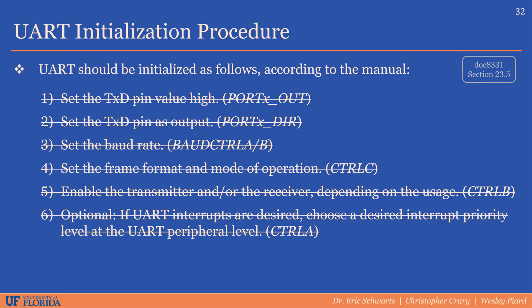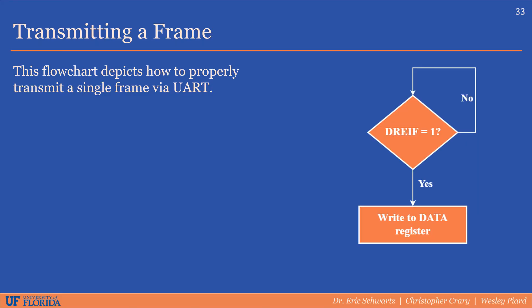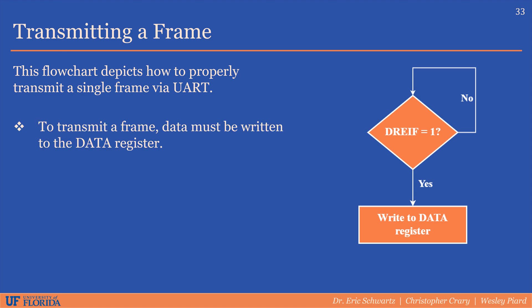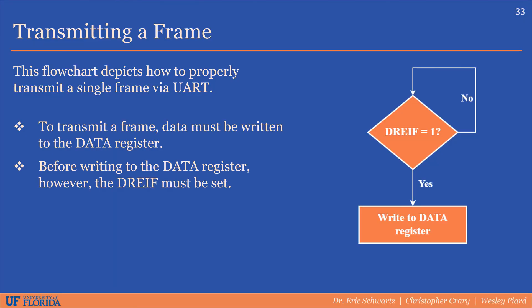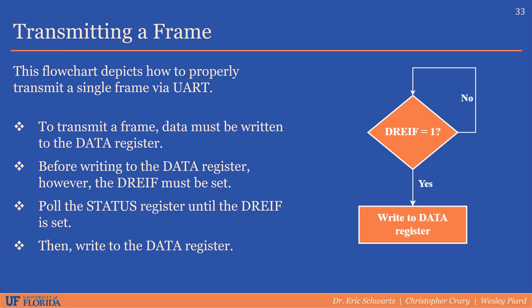That concludes the UART initialization procedure. Now let's move on to how to actually transmit and receive data with UART. One of the most basic actions we can perform is transmitting a single frame of data — to transmit a frame, we must write the data we wish to transmit to the data register. To do this properly, we must first check that there is not already data there that has not been transmitted yet. Before writing to the data register, we'll check whether the data register empty flag is set. If it is set, there is room and we can proceed to write the data. The status register is repeatedly read and the data register empty flag is checked each time until it is a 1, after which we can safely write the data, ensuring no data is lost or overwritten.